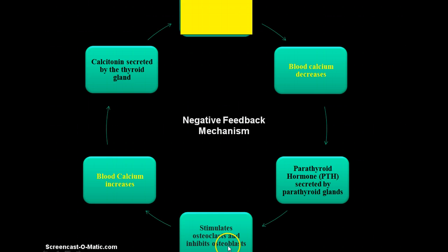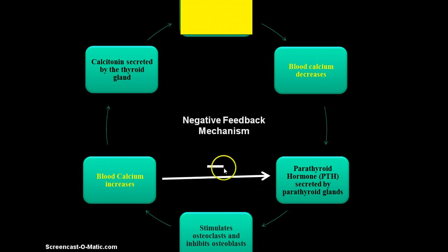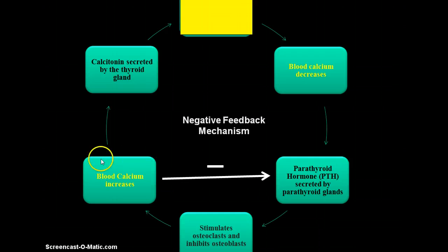Parathyroid hormone will also inhibit osteoblasts. Osteoblasts build bone — they take calcium out of the bloodstream to build bone — and we don't want that to happen because it would lower blood calcium levels. So parathyroid hormone stimulates osteoclasts and inhibits osteoblasts, and both of these effects contribute to blood calcium levels going up. When blood calcium returns to normal, that has a negative effect on parathyroid hormone secretion, which is the negative feedback mechanism.